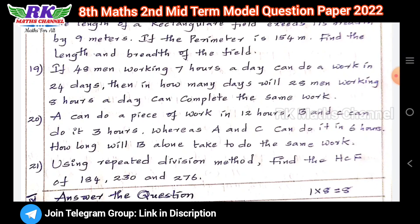Question number 20: A can do a piece of work in 12 hours, B and C can do it in 3 hours, whereas A and C can do it in 6 hours. How long will B alone take to do the same work? Question number 21: Using repeated division method, find the HCF of 184, 230 and 276.